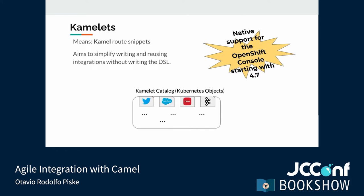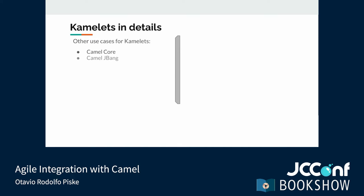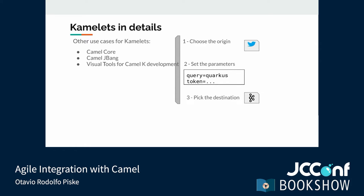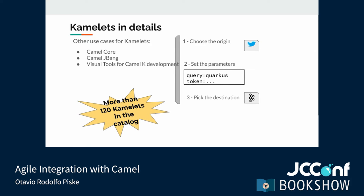Camelets integrate very well with Kubernetes. When used in that environment, they become part of the Kubernetes Objects Catalog, and distributions such as OpenShift can provide native support for them. But Camelets are not limited to the Kubernetes environment — they can be used with CamelCore and CamelJBang too. Another benefit is standardizing the user experience: regardless of the environment, the steps are pretty much the same — pick the origin, set the parameters, and choose the destination. Our catalog currently has more than 120 Camelets.